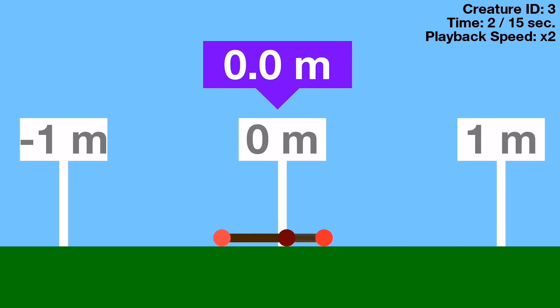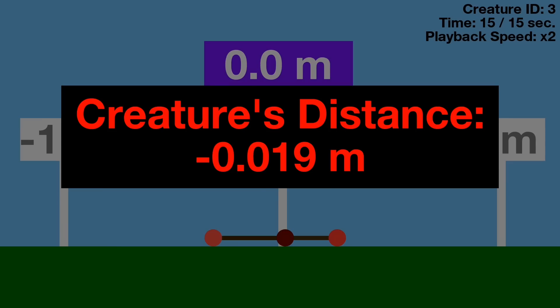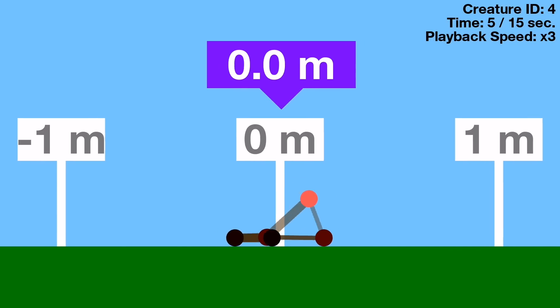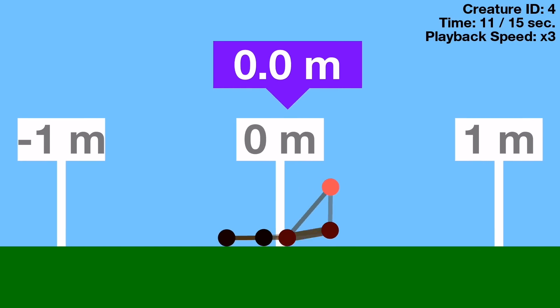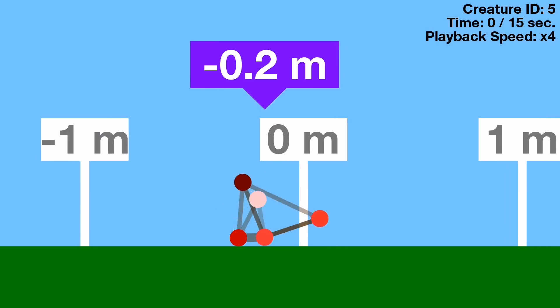We're going to speed up the playback right now so we can get through all 1,000 creatures in time. Also, look how symmetrical this creature is! But it still moved backward. Our fourth creature has what looks like a sail sticking up in front, but it's not catching any wind.